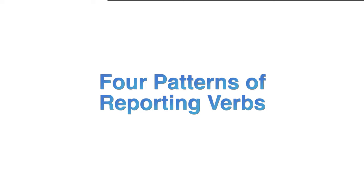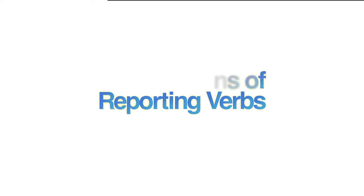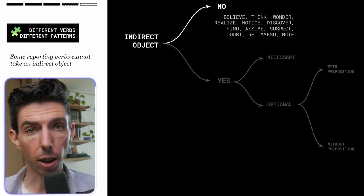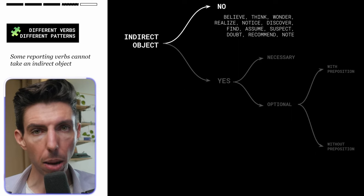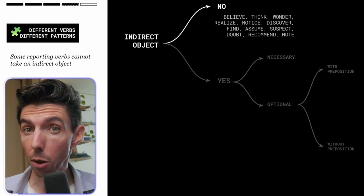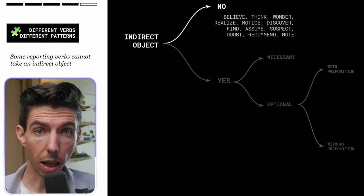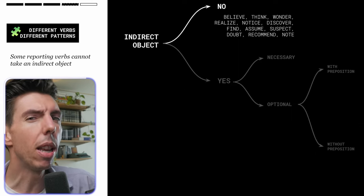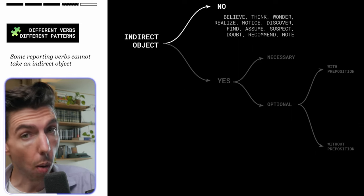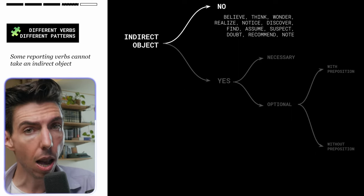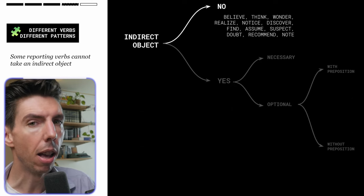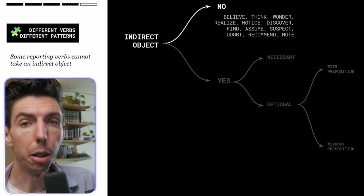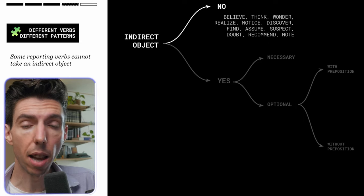The important thing to understand is that all the different reporting verbs have different meanings and they all follow different patterns. There are basically four groups they fit into, all relating to the indirect object: Does the reporting verb require an indirect object? Does it even allow one? That's the key thing to understand. Let's take a look at all the reporting verbs that do not allow an indirect object — pause here and take a look at this list.